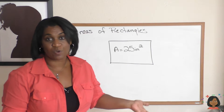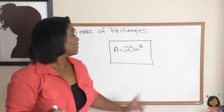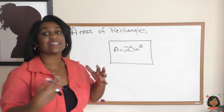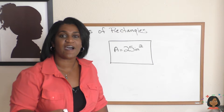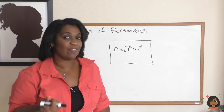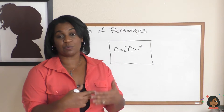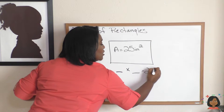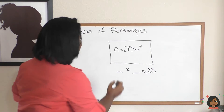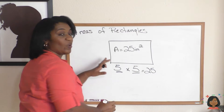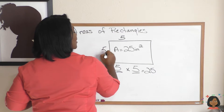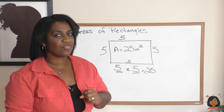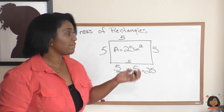For example, if I told you the area of this square was twenty-five inches squared, would you be able to find the length and width? With a square, the length and width are equal, so what number times itself gives me twenty-five? Five — because five times five is twenty-five. That means this side is five, and this side is five, and so are all the sides. The length of this square is five inches.